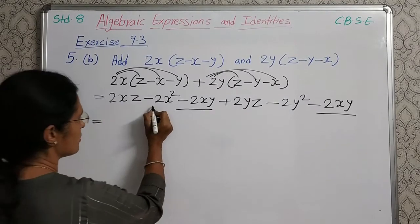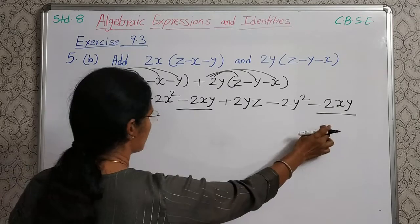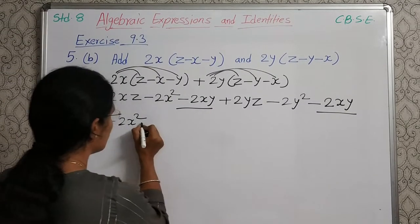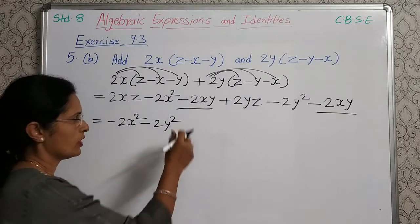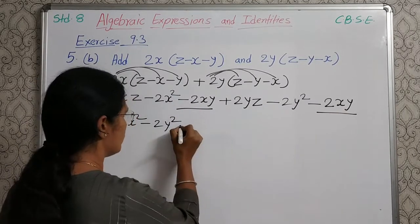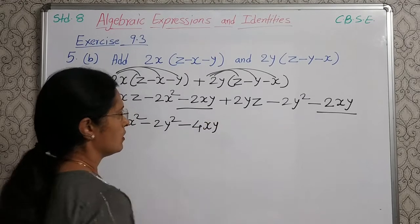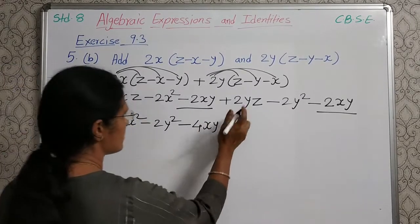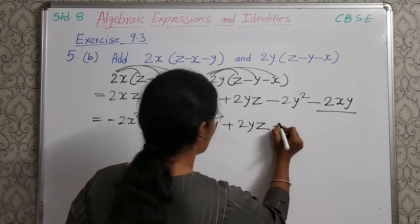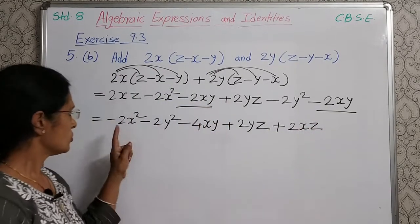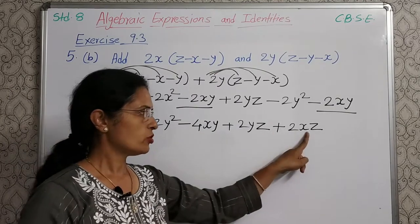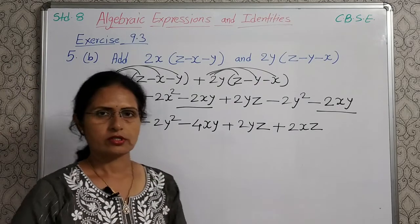First we will write the remaining terms, then solve the like terms. So first minus 2X square, then minus 2Y square. Now solve: minus 2XY and minus 2XY — minus 2 minus 2 is minus 4 — XY common variables, so minus 4XY. After that, write plus 2YZ and then the last term plus 2XZ. So the answer is: minus 2X square minus 2Y square minus 4XY plus 2YZ plus 2XZ.